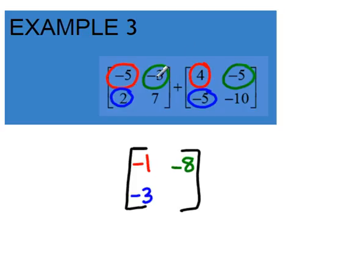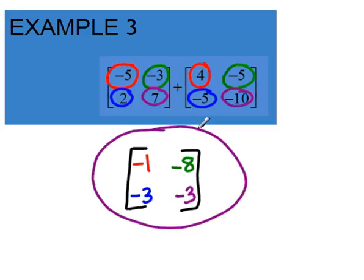Finally, I can take our last element of 7 with our last element of negative 10. Both of those are in the bottom right. When we add those together, 7 and negative 10 will give us negative 3, and we'll put that in the answer space as well. So there's your answer.